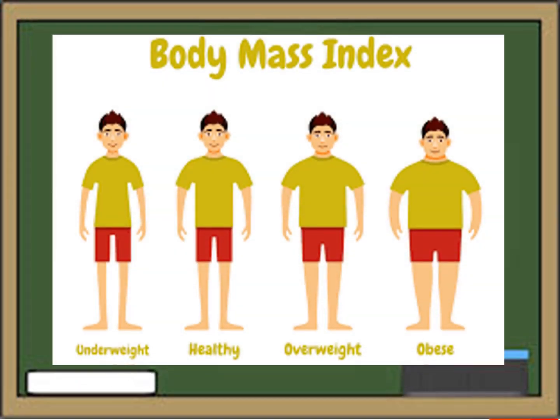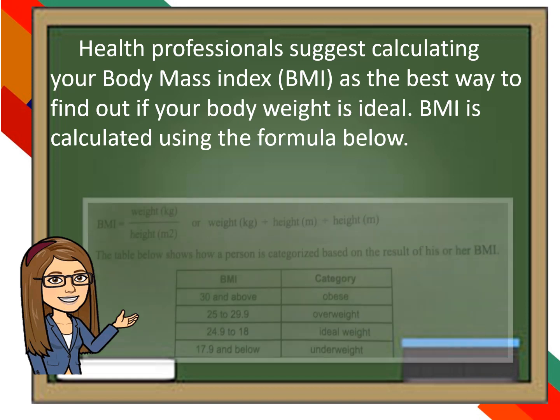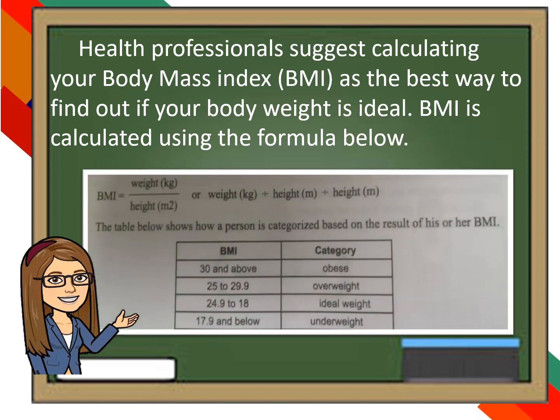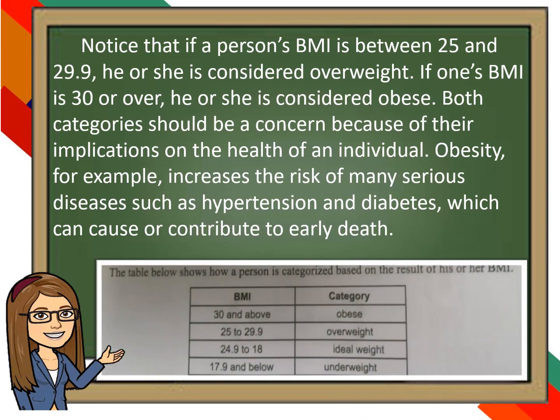Now, let's talk about body mass index or BMI to determine whether one is underweight, at a healthy or ideal weight, overweight, or obese. Health professionals suggest calculating your BMI as the best way to find out if your body weight is ideal. BMI is calculated using the formula shown. If a person's BMI is between 25 and 29.9, he or she is considered overweight. If one's BMI is 30 or over, he or she is considered obese. These categories should be a concern because of their implications on health. Obesity, for example, increases the risk of many serious diseases such as hypertension and diabetes, which can cause or contribute to early death.